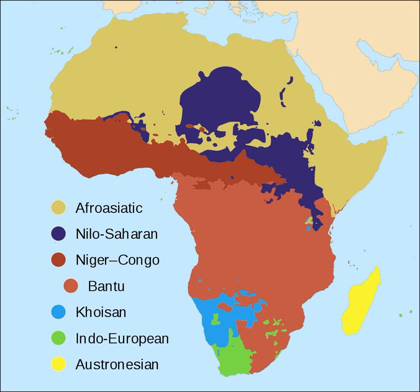However, one of the notable differences between Africa and most other linguistic areas is its relative uniformity. With few exceptions, all of Africa's languages have been gathered into four major phyla. Around 100 languages are widely used for inter-ethnic communication. Arabic, Somali, Berber, Amharic, Oromo, Igbo, Swahili, Hausa, Manding, Fulani and Yoruba are spoken by tens of millions of people.